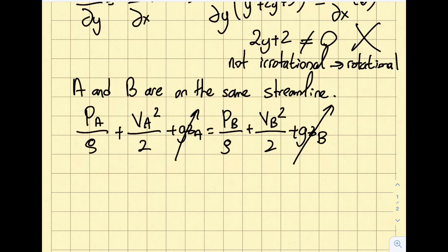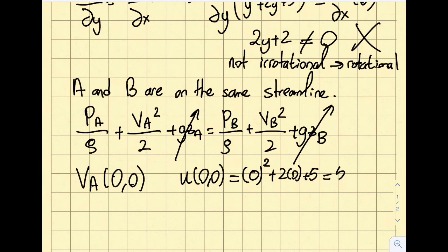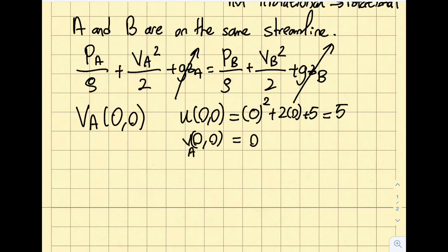So let's calculate va and vb values. We need to do some work for that. So let's start with the va value. So the va is going to be at 0,0. My u at 0,0 will be obtained by inserting y equals 0 into the equation that I gave you in terms of u. So it's going to be 0 squared plus 2 times 0 plus 5. So that will be the value of 5. And if I do v at 0,0, you will see that it is 0. And va, the magnitude of it is going to be 5 squared plus 0 squared. The z direction is also 0 as well. So from here, I will obtain my va is 5.